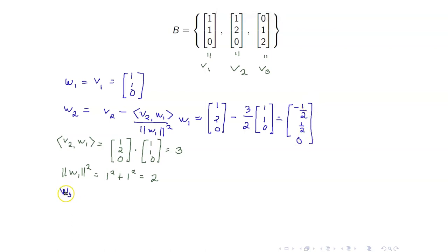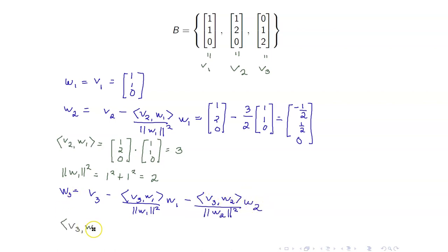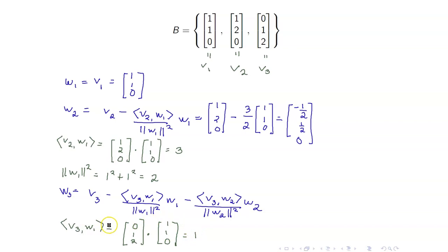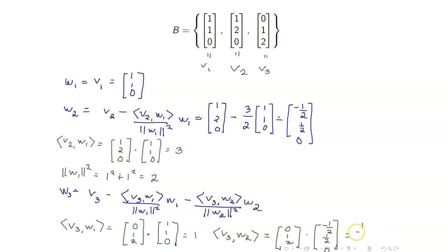Next, let us get W3. W3 equals V3 minus the inner product of V3 with W1 over the norm of W1 squared times W1, minus the inner product of V3 with W2 over the norm of W2 squared times W2. Let us evaluate the inner product of V3 and W1: that's (0, 1, 2) dot (1, 1, 0), which equals 1. And V3 dot W2 equals 1/2.